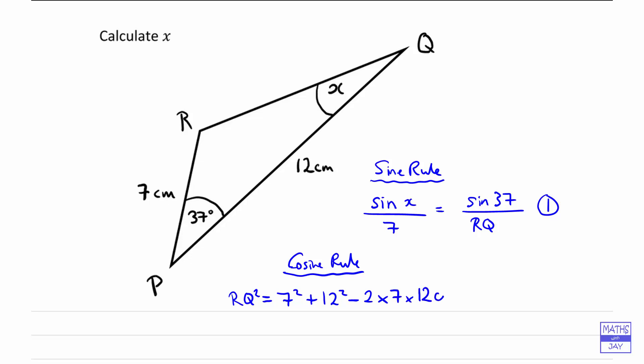so 7 and 12, and the cosine of the angle between those two sides. So if we use a calculator to work that out, we will get 58.829 something or other,